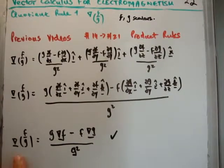We find that the gradient of two scalars, the quotient of two scalars f and g, is in actual fact g times the gradient of f minus f times the gradient of g, divided by g squared. And that is quotient rule number one.